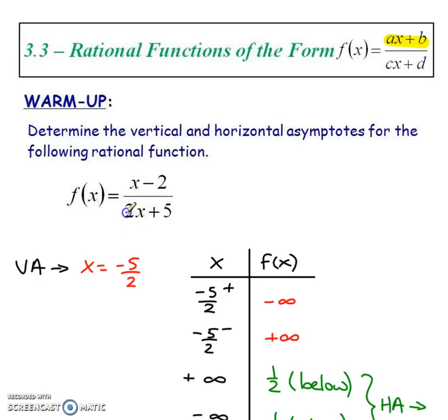So the vertical, we always looked at the denominator. What are the restrictions on x so that we don't get a zero as the denominator? Well, x can't be negative 5 over 2.